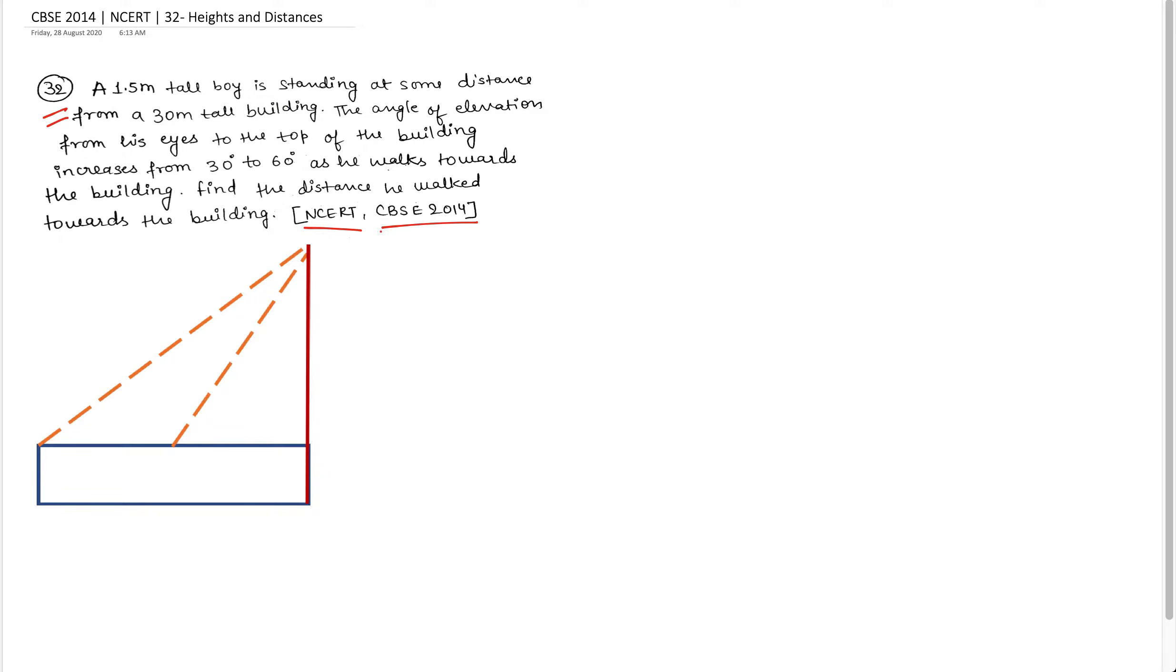Let's start solving this question. Question says that a 1.5 meter tall boy is standing at some distance from a 30 meter tall building. So this is my boy. This is a 1.5 meter tall boy. And this is the entire tower. This tower is 30 meter tall tower. And the boy is standing at some distance from the building. The angle of elevation from his eyes to the top of the building increases from 30 degree to 60 degree as he walks towards the building.